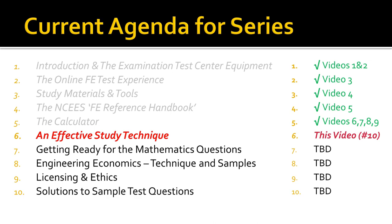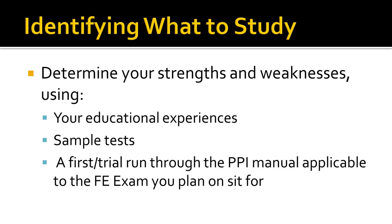I've covered five parts and it has taken me nine videos to do so. The first thing you need to do is identify what to study. You need to identify your strengths and weaknesses. You can use a lot of different inputs: your educational experiences, what you're good at from school. Hopefully you know you're good at math because the FE exam has a lot on it. You may also find sample tests, some you've already taken and some you plan on taking. I do suggest that you buy the one that NCEES provides.